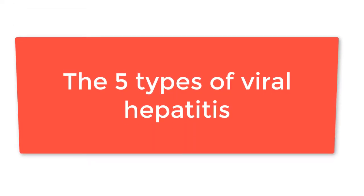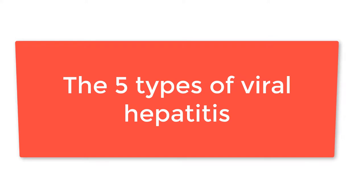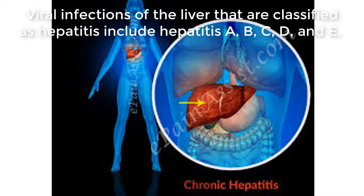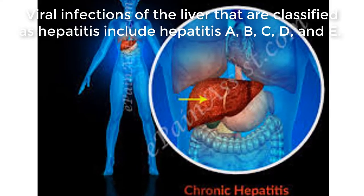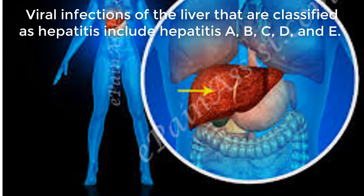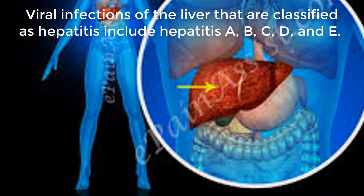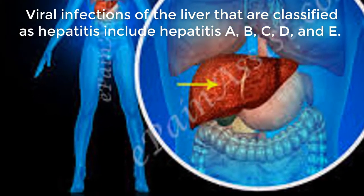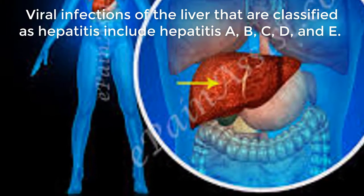The five types of Viral Hepatitis. Viral infections of the liver that are classified as hepatitis include Hepatitis A, B, C, D, and E.